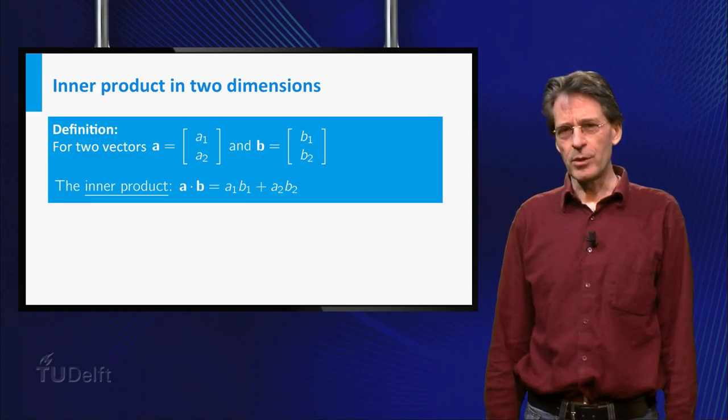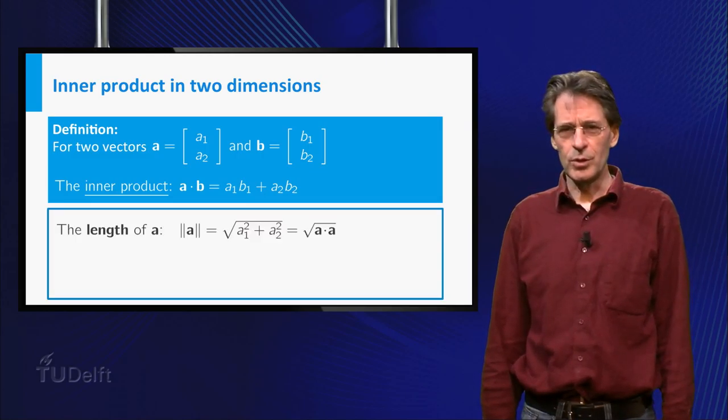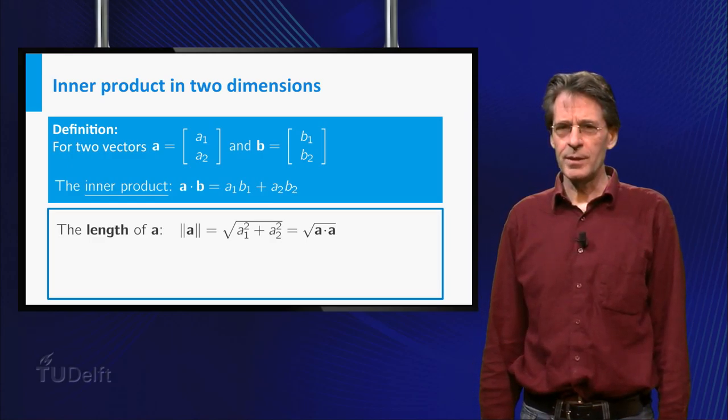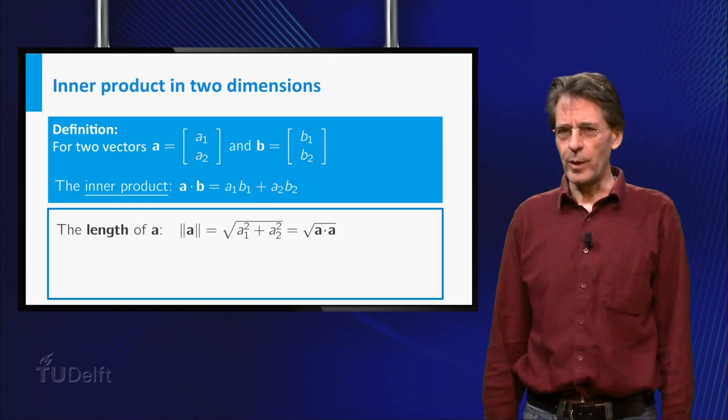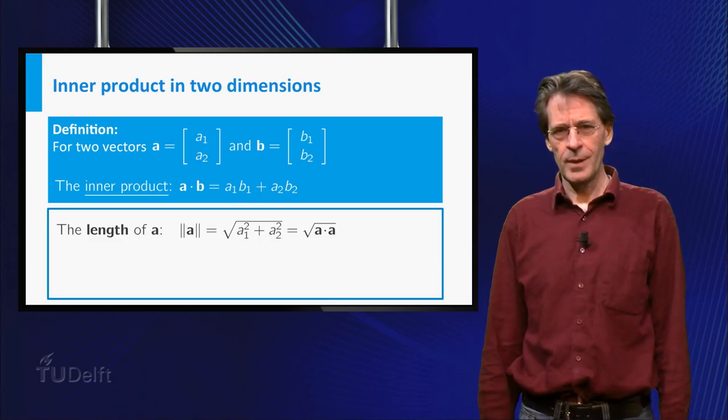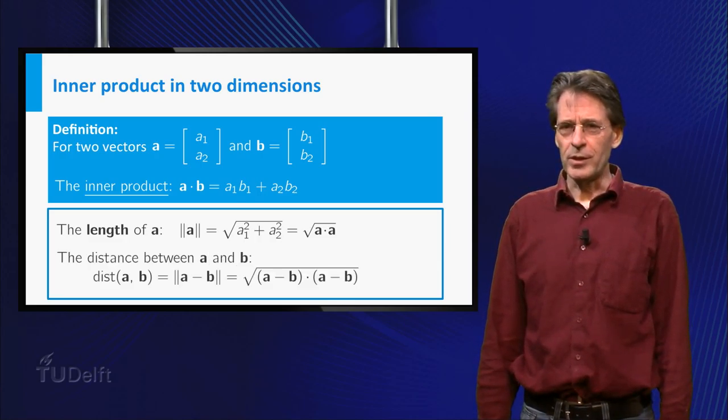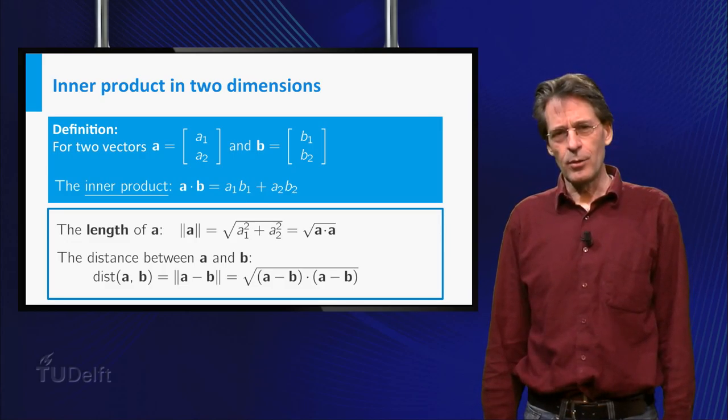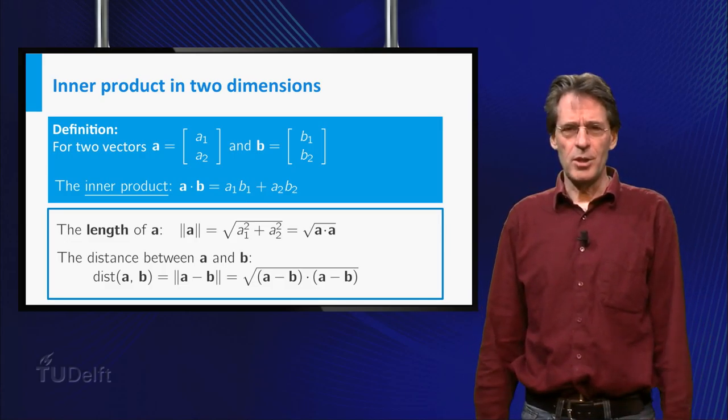The length of a vector equals the square root of a1 squared plus a2 squared, and this can be written as the square root of the inner product of a with itself. The distance between two vectors a and b is then the length of the vector b minus a, or a minus b.